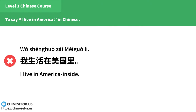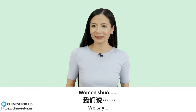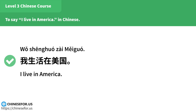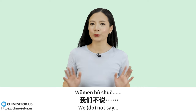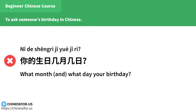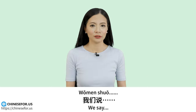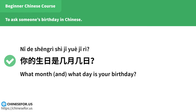To say "I live in America" in Chinese: 我们不说「我生活在美国里」，我们说「我生活在美国」。To ask someone's birthday: 我们不说「你的生日几月几日」，我们说「你的生日是几月几日」。